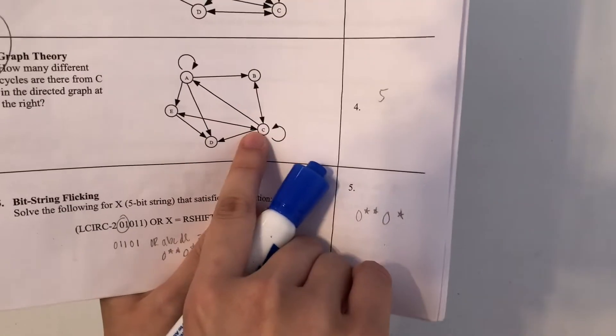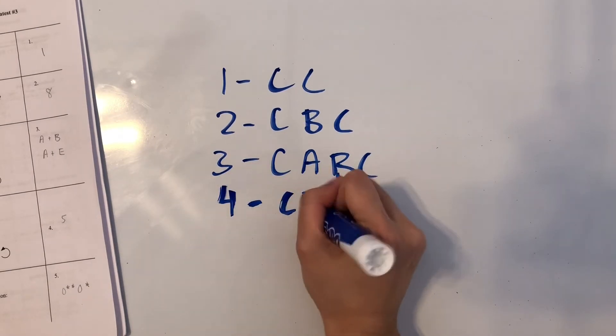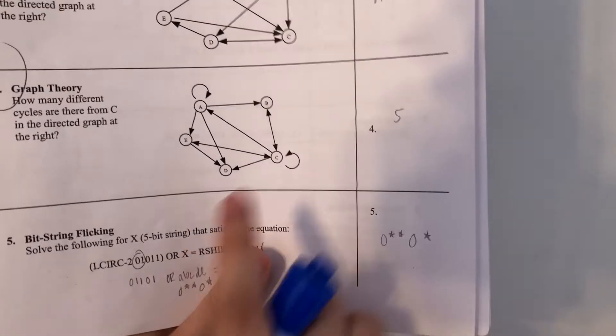We can go from C to E to C, so that's a nice short little cycle, C-E-C. And there is one more path, let's try to find it.